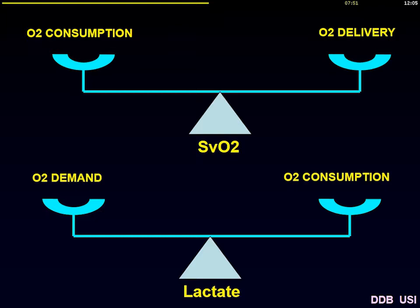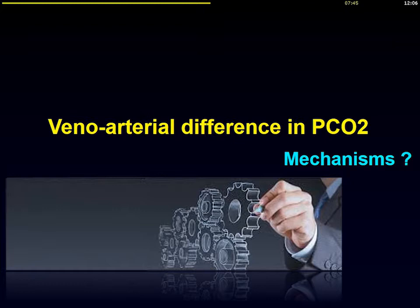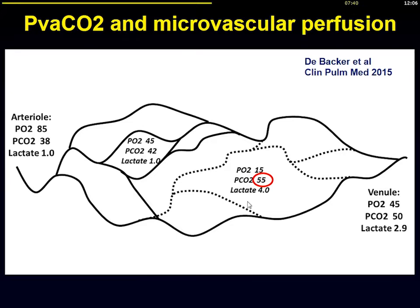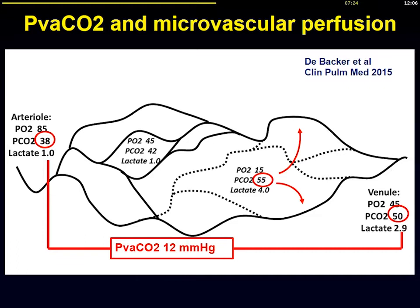The last marker I want to cover is the veno-arterial difference in PCO2. When a piece of tissue is not well perfused, there is an increase in CO2 there in addition to low PO2. Interestingly, this CO2 will still diffuse to nearby vessels even though the area is not well perfused, and can be detected on the venous side. The gradient between the arterial and venous side will be increased. For oxygen this fails because the diffusion distance is limited, which is not the case for CO2.